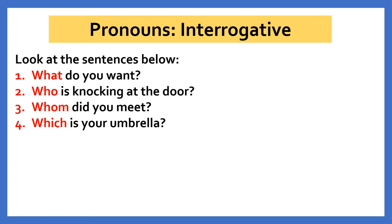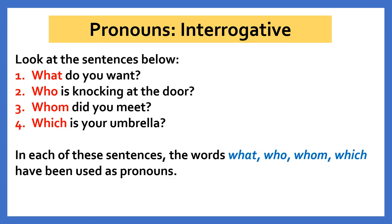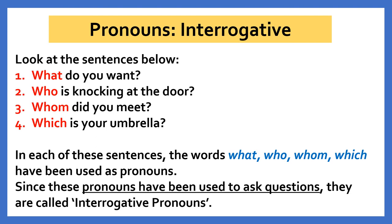Now we move ahead and learn about interrogative pronouns. Look at the sentences written below. First: What do you want? Second: Who is knocking at the door? Third: Whom did you meet? And the last: Which is your umbrella? In each of these sentences, the words what, who, whom and which have been used as pronouns. Since these pronouns have been used to ask questions, they are called interrogative pronouns.